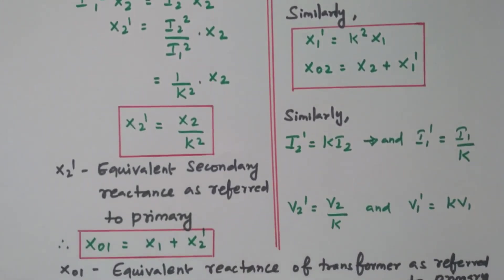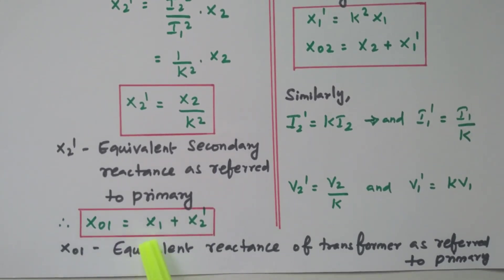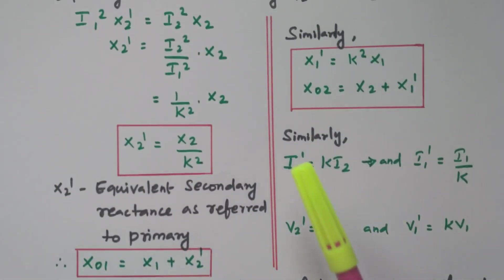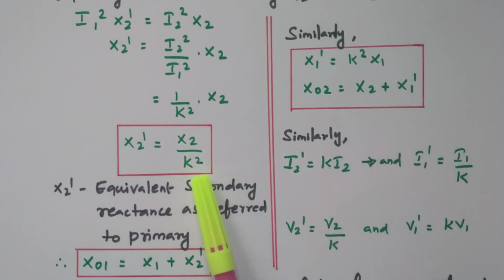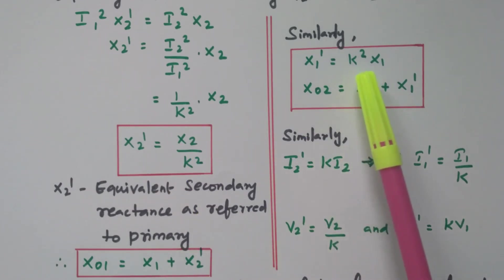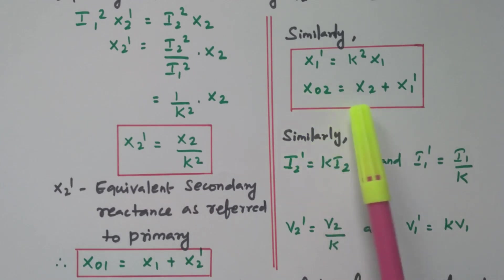The total reactance in the primary, X01, is X1 as it is in the primary, plus X2 dash transferred from the secondary. So X01 equals X1 plus X2 dash — the equivalent reactance of the transformer referred to the primary. Similarly, if transferred from primary to secondary, X1 dash equals K squared into X1. So the total reactance in the secondary, X02, equals X2 plus X1 dash.